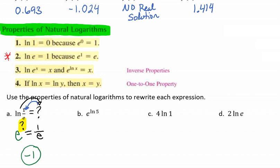For example B, we have e raised to the ln of 5. Here we use the inverse property: e raised to a natural log — they cancel each other out, giving us a solution of 5.